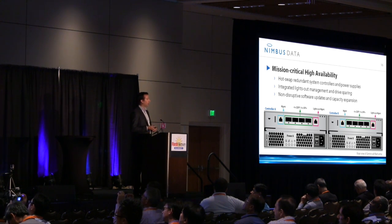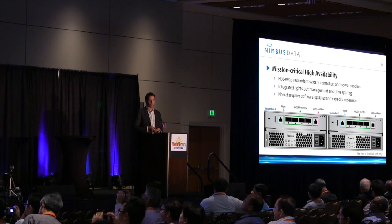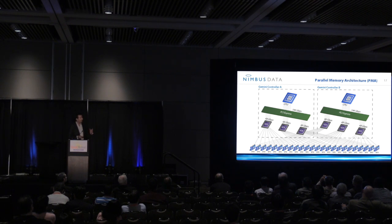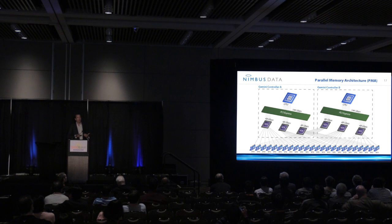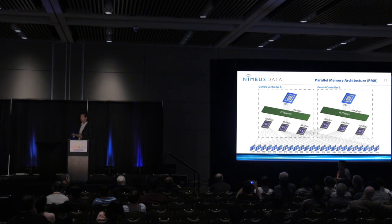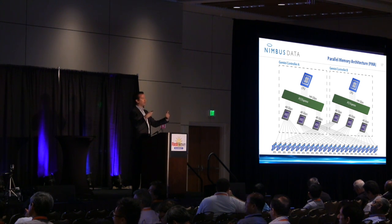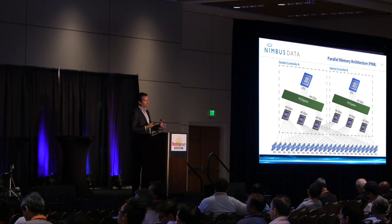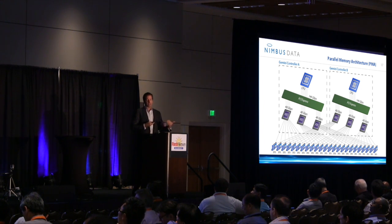From a high-availability perspective, we have a dual-controller architecture with non-disruptive software updates and full hot-swap components. We developed a patent-pending architecture that allows us to extract the full performance potential out of flash technology. Most all-flash array vendors, by taking generic SSDs and putting them in generic servers, are bottlenecked between the controller and the SSD shelves. We merged those two things together — putting controllers and SSDs in the same chassis — which multiplied bandwidth 6X between the SSDs and the controllers. We call this our parallel memory architecture.